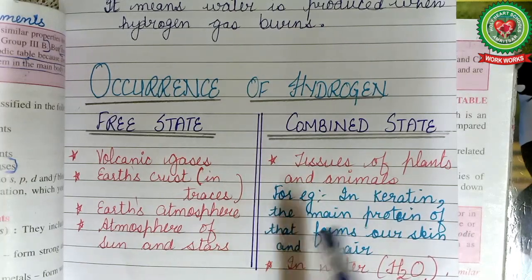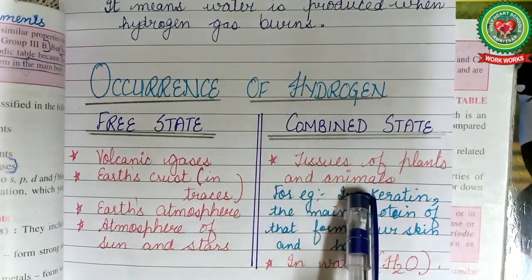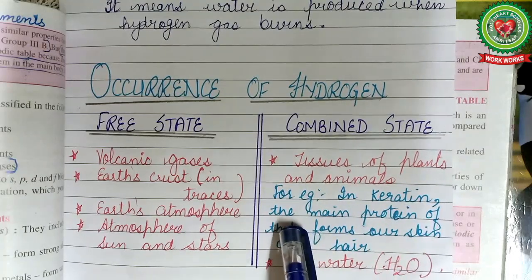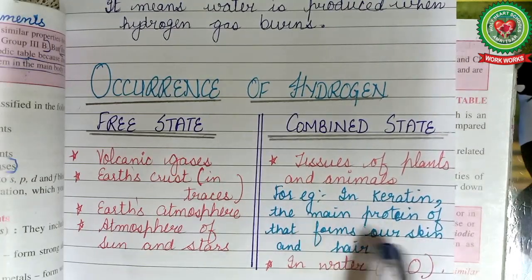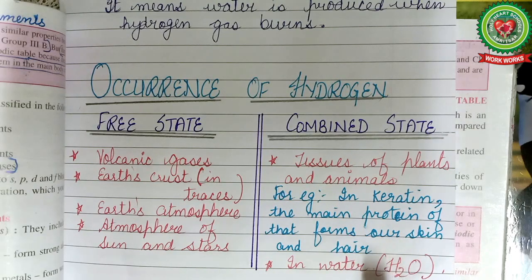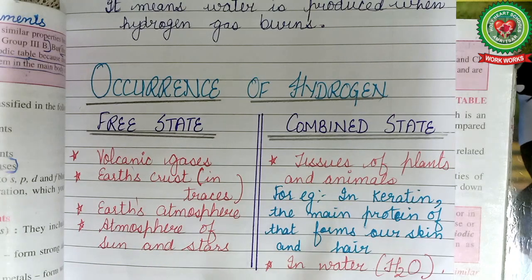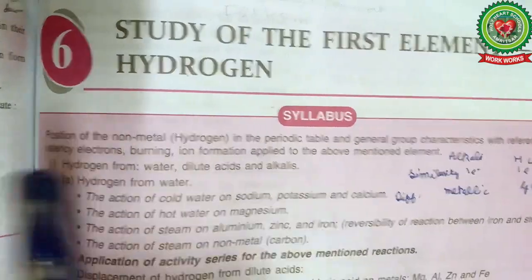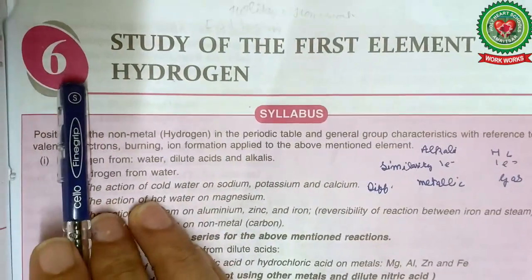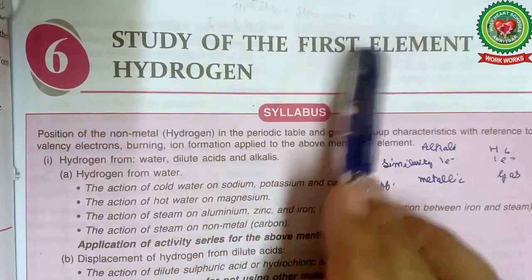In the combined state, hydrogen is present in the tissues of plants and animals — for example, in keratin, the main protein forming our skin and hair. It is also present in water, at about 11.1% by weight. Hydrogen is a characteristic constituent of many acids like HCl and H₂SO₄, alkalis like NaOH, and also hydrocarbons and petroleum products.